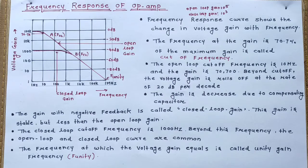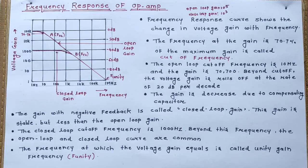To achieve a stable gain, we use negative feedback, and the resulting stable gain is called the closed loop gain. However, there is a drawback: the gain is reduced compared to the open loop gain.